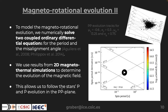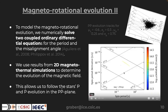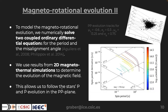We evolve neutron stars in the P-Pdot diagram. Neutron stars are born at the top left and first follow lines of constant magnetic field; once the field decays they start to bend downward. We follow their end positions and compare those snapshots to what we observe, trying to find which input parameters best match the data.